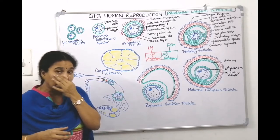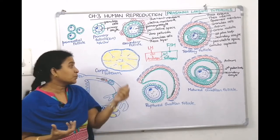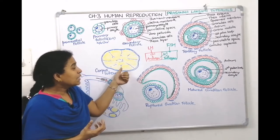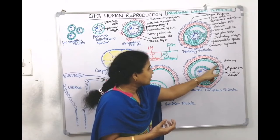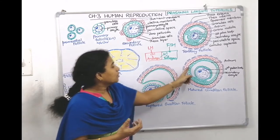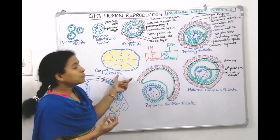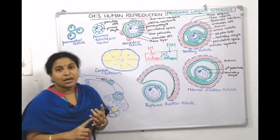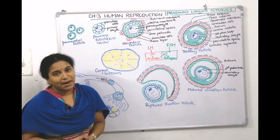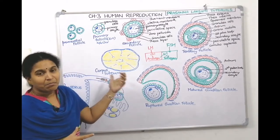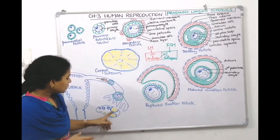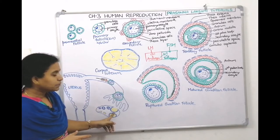The corpus luteum starts producing estrogen and progesterone. Estrogen is produced by the follicular cells, and progesterone is produced by the corpus luteum. These two hormones maintain conditions suitable for fertilization and implantation.